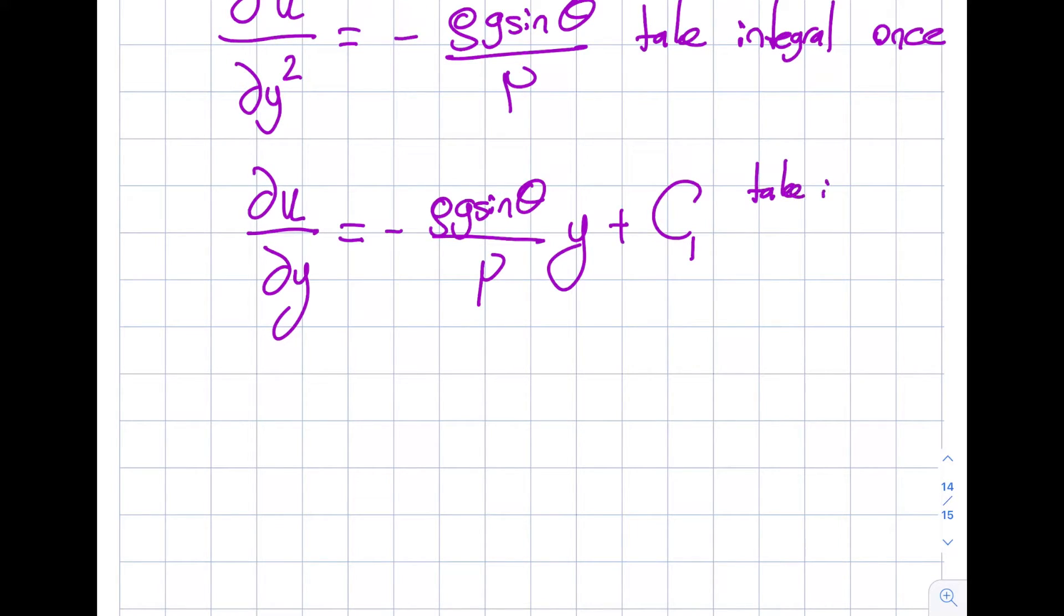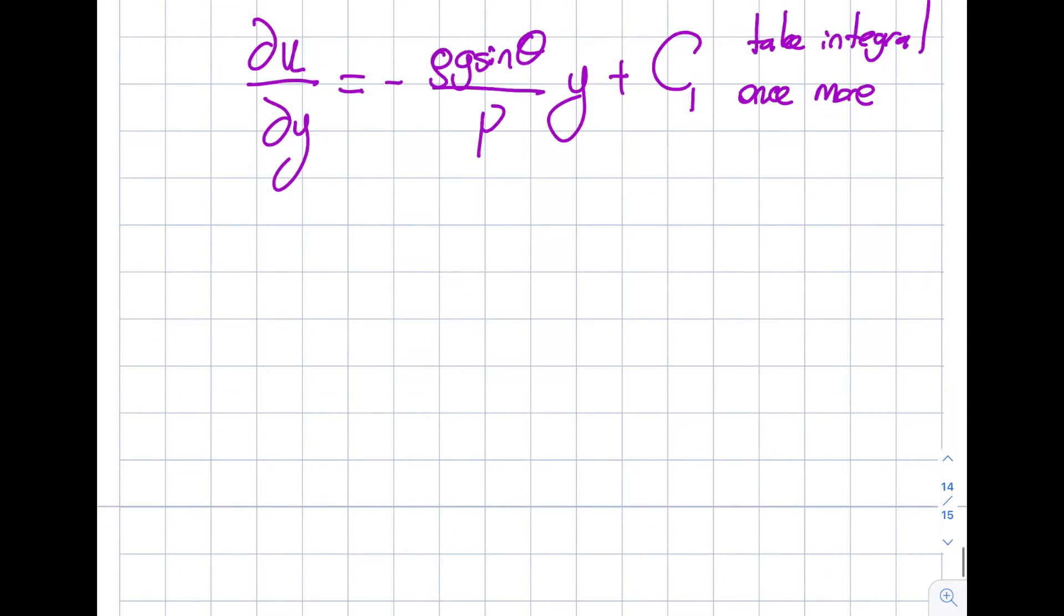Then what I'm going to do is take integral once more. And then I get myself u of y is equal to minus rho g sine theta divided by 2 viscosity y square plus c1 y plus c2. This is good. This doesn't look too fancy to me. It's similar to the Poiseuille flow except this is different.